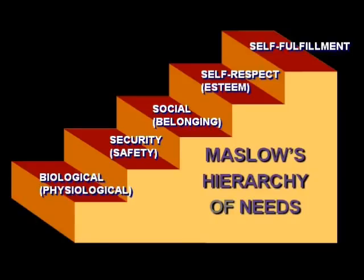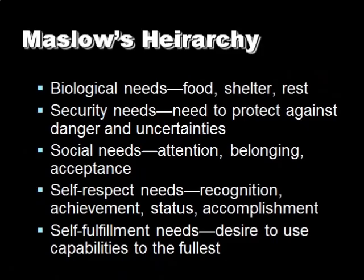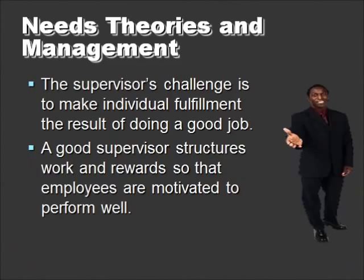On the second level of the hierarchy is security or safety needs — the desire for protection against danger and life's uncertainties. Social or belonging needs is the third element: the desire for love, affection, and affiliation with something worthwhile. Fourth is self-respect or esteem needs, which is a person's desire for recognition, achievement, status, and a sense of accomplishment. And finally, the top level on Maslow's hierarchy of needs is self-fulfillment or self-realization — the desire to use one's abilities to the fullest extent.